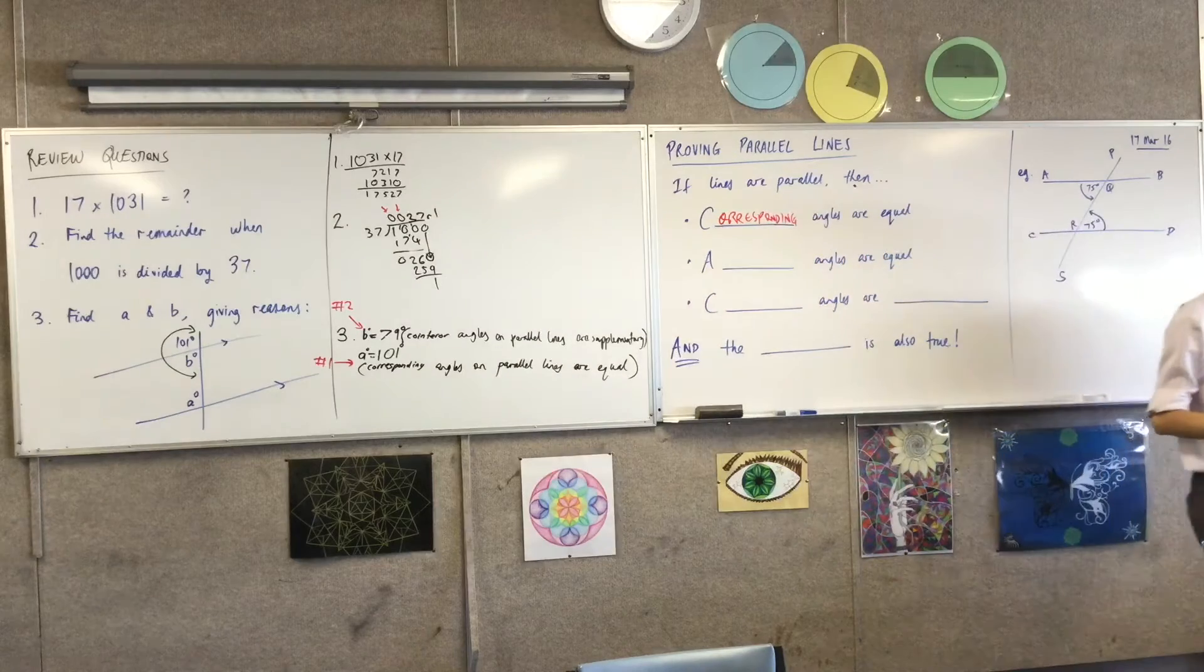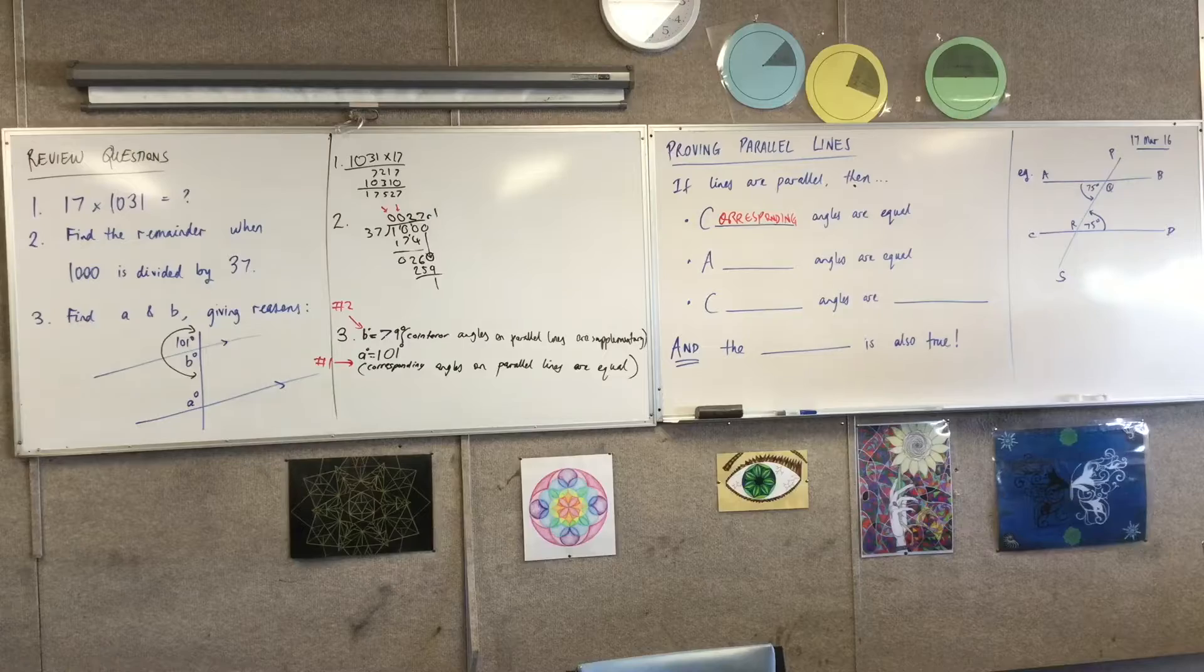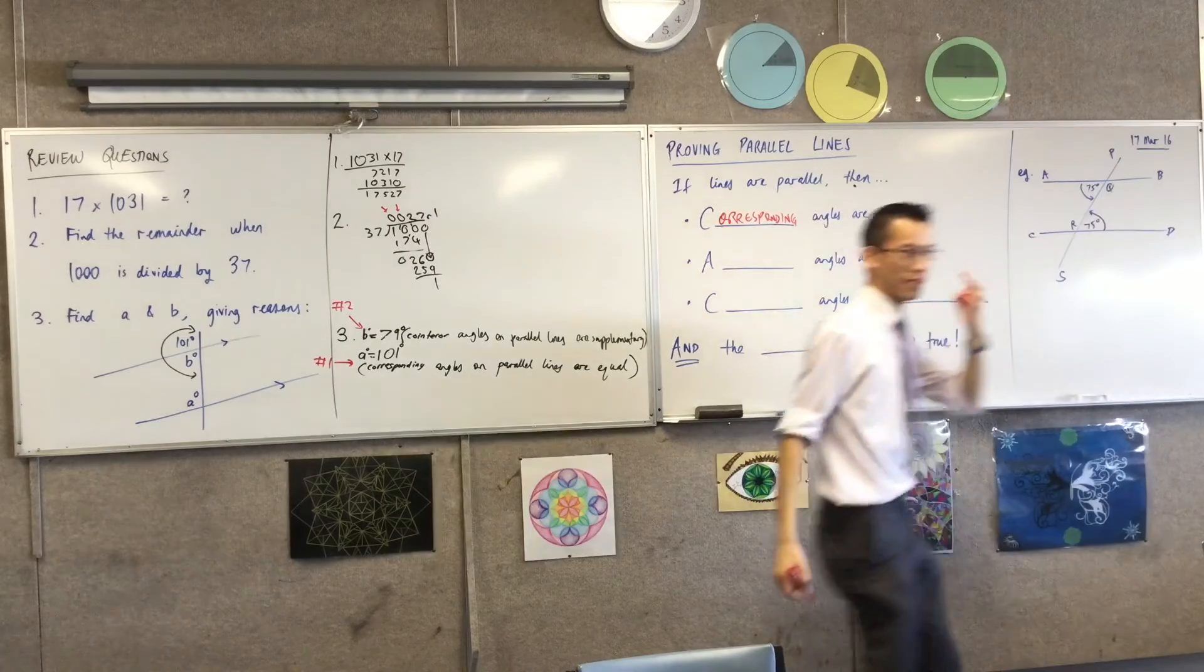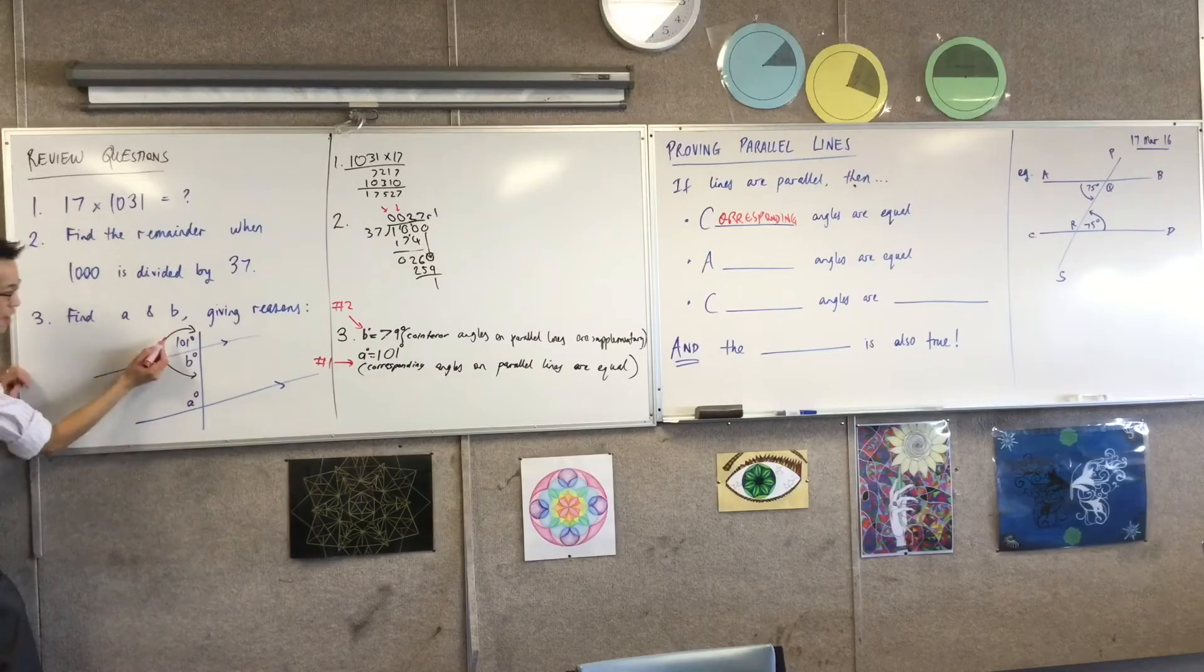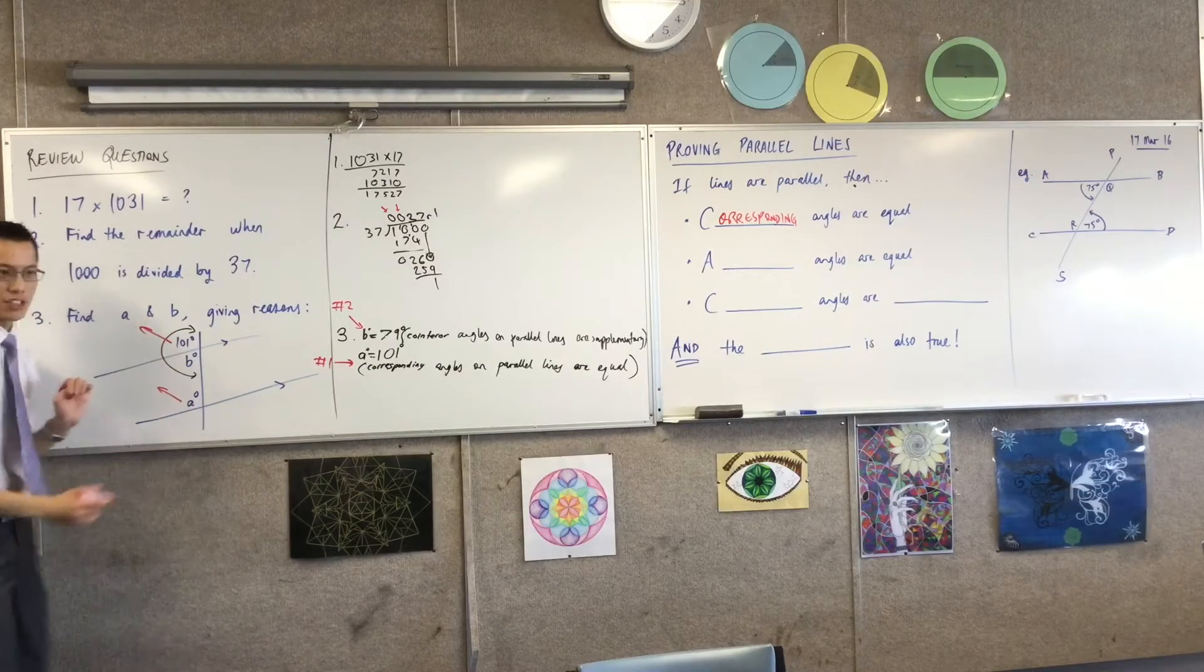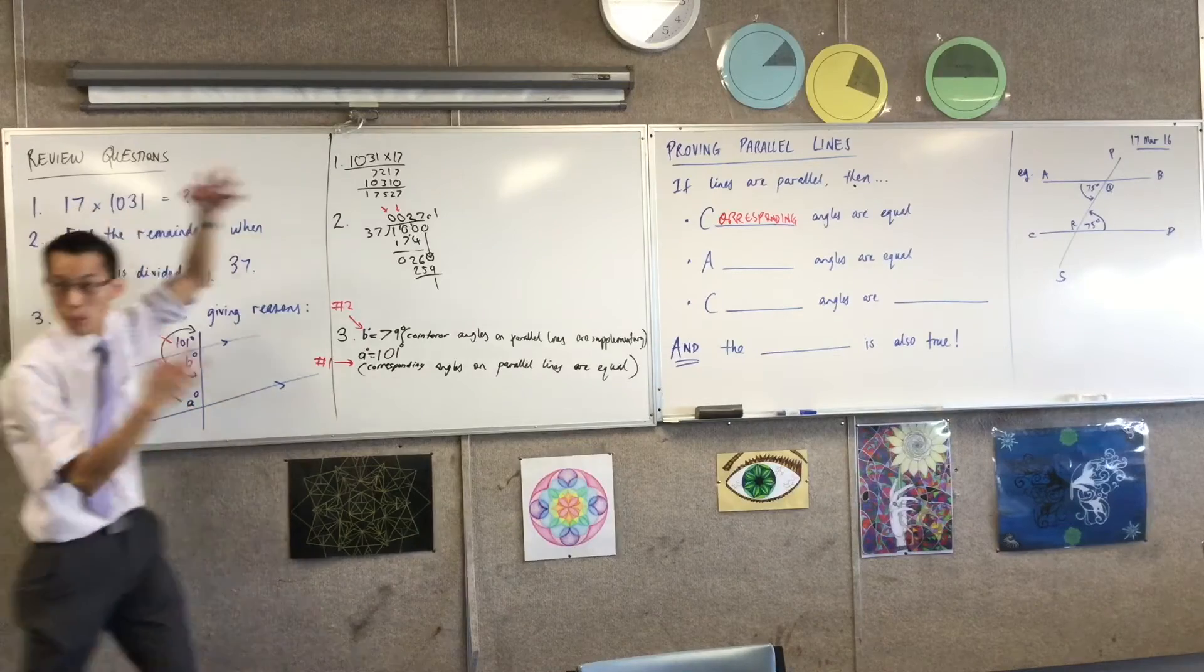Corresponding angles, the ones that are, how can you tell they're corresponding? What makes them correspond? Yeah, Nicole? Because they're on the straight line and they're on the same side as well. Good. On the same side, they're facing the same direction. Do you remember that's the way that I said? Just look at which way they're facing, if they're the same way, that's corresponding.